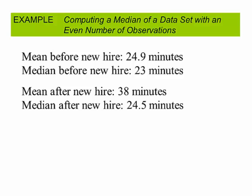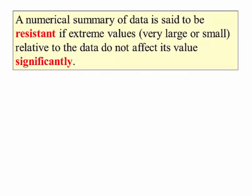So which one does a better job of describing the typical value? In this case, the median would. A numerical summary of data is said to be resistant if extreme values — either very large or very small — relative to the data do not affect its value significantly. The median is resistant to extreme values; the mean is not. Every single value affects the mean — that's its strength and also its weakness.